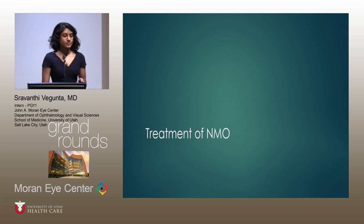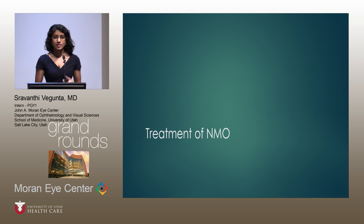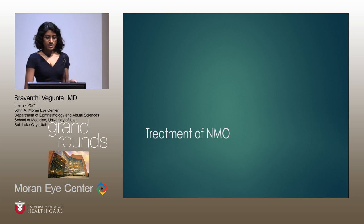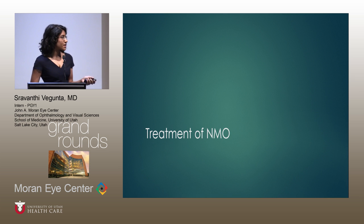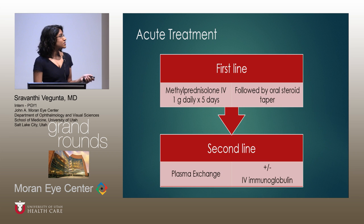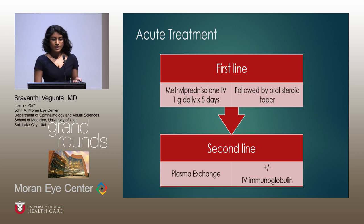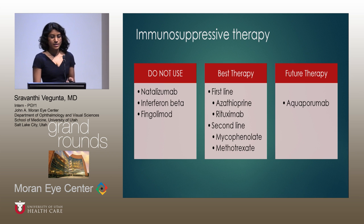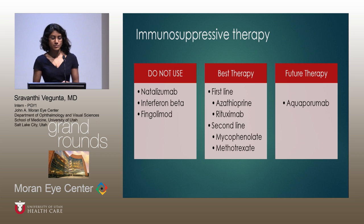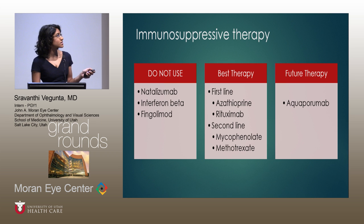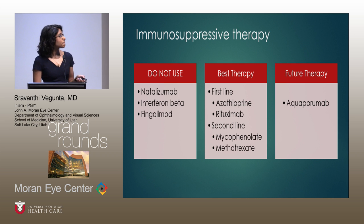The treatment of NMO has been studied mostly in retrospective studies with small populations, so the evidence isn't well supported, but it's the best we have. First-line treatment is high-dose IV methylprednisolone for five days followed by an oral steroid taper. For chronic immunosuppressive therapy, it's critical to distinguish MS from NMO spectrum disorders, because certain MS medications — including natalizumab, interferon beta, and fingolimod — can actually worsen or fail to prevent relapses in NMO patients.